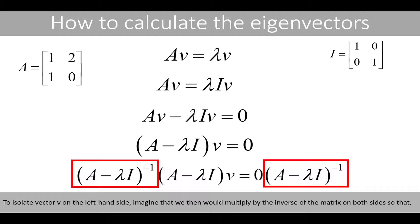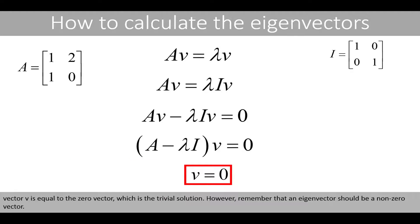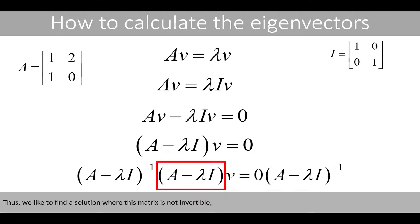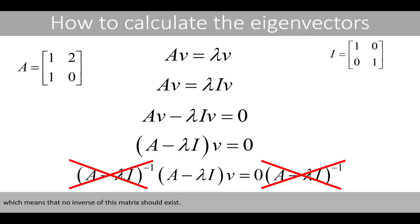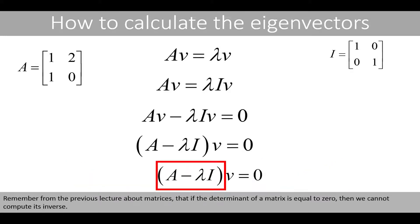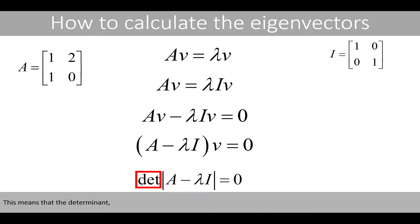To isolate vector V on the left-hand side, imagine that we would multiply by the inverse of the matrix on both sides, so that vector V is equal to the zero vector, which is the trivial solution. However, remember that an eigenvector should be a non-zero vector. Thus, we like to find a solution where this matrix is not invertible, which means that no inverse of this matrix should exist. Remember from the previous lecture about matrices that if the determinant of a matrix is equal to zero, then we cannot compute its inverse. This means that the determinant of this matrix should be equal to zero.